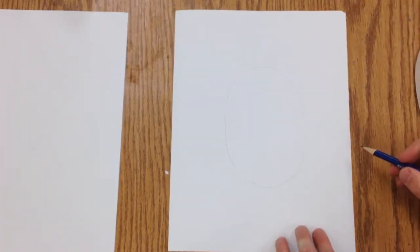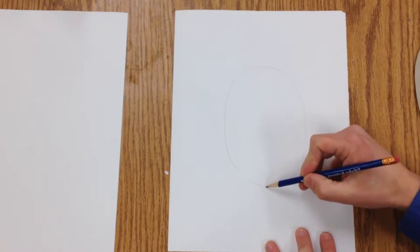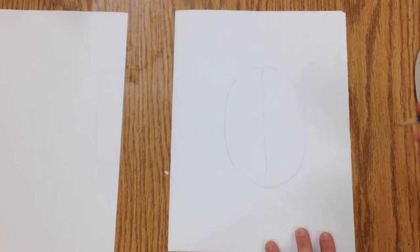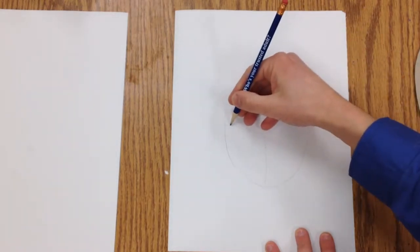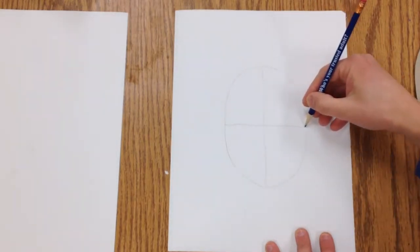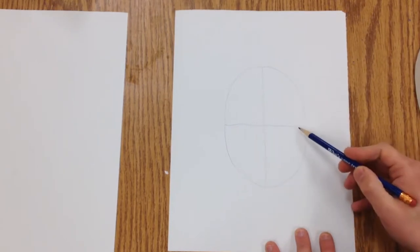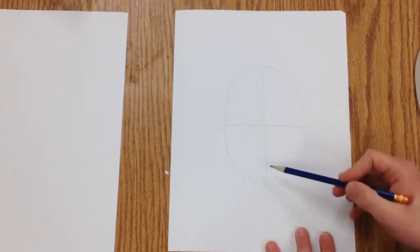So I'm also going to draw a line of symmetry here, and I'm going to draw a line through the middle. Our eyes are going to line up on the middle line here. Seems like that's a funny place to put them, but we have all this room for our brain and our hair up here.